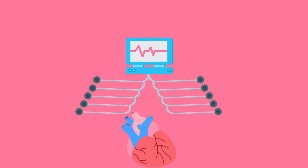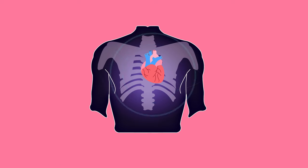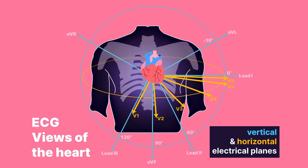There are 10 leads used in a 12-lead ECG. These 10 leads provide 12 views of the heart.